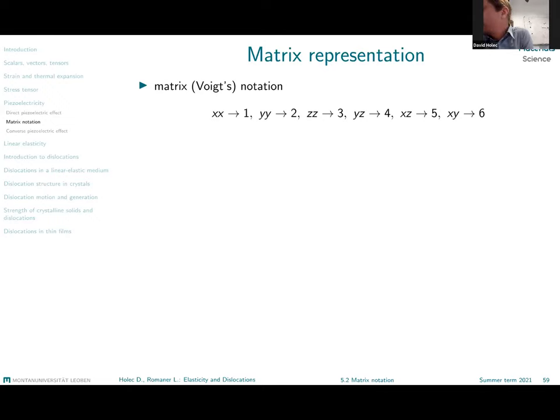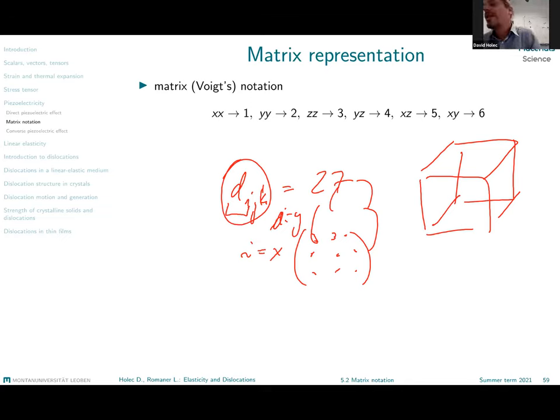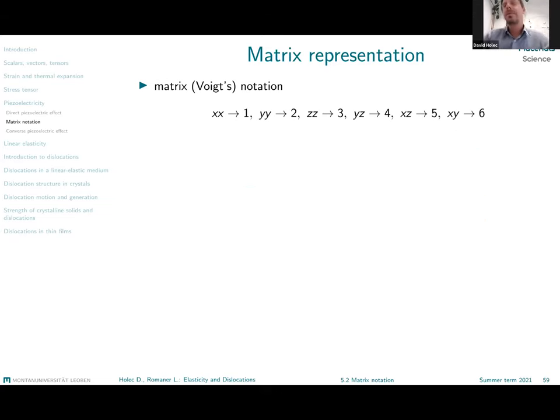Now I want to introduce something which will be helpful for us in the elasticity and what will be simplifying this notation. If you think actually about our object dijk it has 27 components, so for each i we have a matrix three by three components right. And then I can order these three matrices for i equals x, i equals y and i equals z, so I can think about this object as a cube of numbers, fair enough. But I can also take into account the advantage of this symmetry.